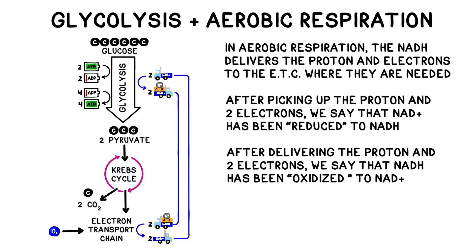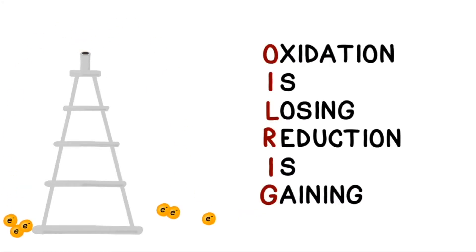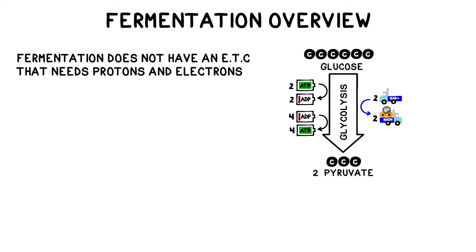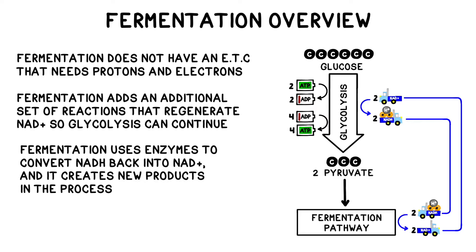In regular aerobic respiration, the NADH delivers the proton and two electrons to the electron transport chain where they're needed, and is thereby oxidized back into NAD+. The terms oxidation and reduction can be confusing, so remember OIL RIG: oxidation is losing and reduction is gaining. In aerobic respiration, glycolysis prepares some of the reagents that the electron transport chain needs, and then the electron transport chain prepares some of the reagents that glycolysis needs. But in fermentation reactions where there is no electron transport chain, we'd still need a steady supply of NAD+ in order to keep picking up the waste products. Fermentation adds an additional set of reactions that regenerate NAD+ so that glycolysis can continue, involving NADH losing electrons — an oxidation reaction.